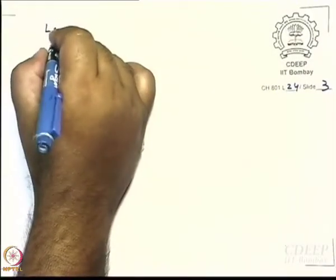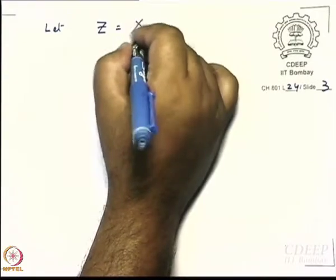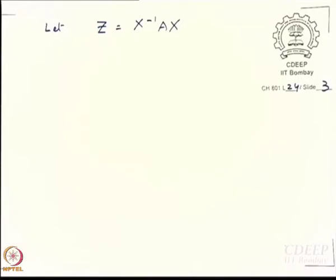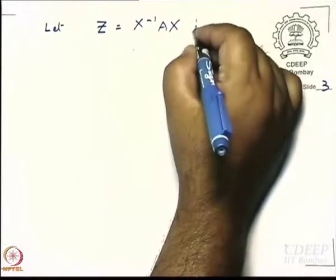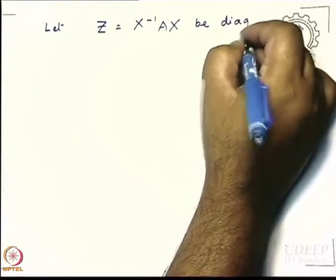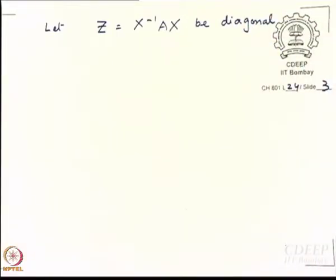We go ahead by doing a similarity transformation — we want to simplify the problem. We let Z = X⁻¹AX, and let this Z be a diagonal matrix. Diagonalization is usually the first step of any problem involving matrices, because the moment you diagonalize, life becomes much simpler. A constant matrix λE is already diagonal, so there is no harm in performing a similarity transformation on it — you still get back a diagonal matrix.